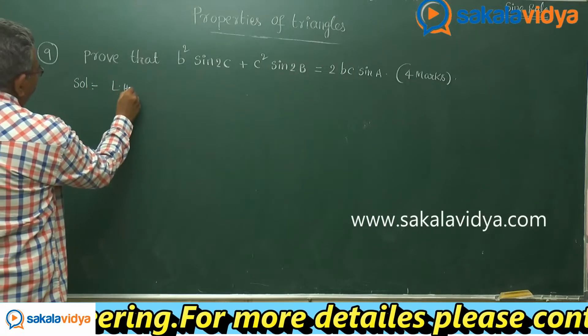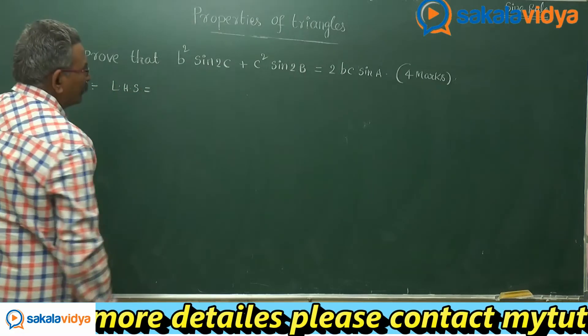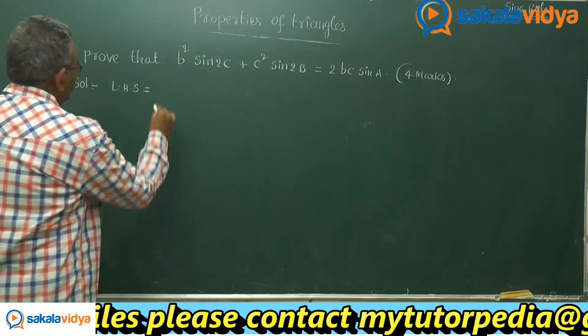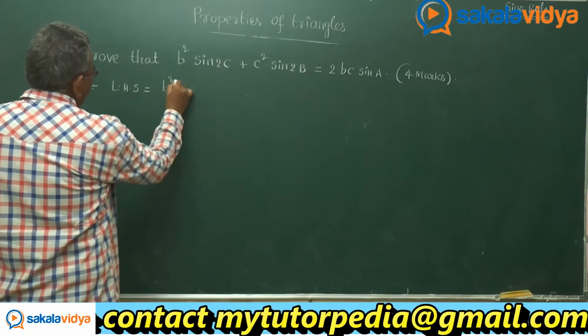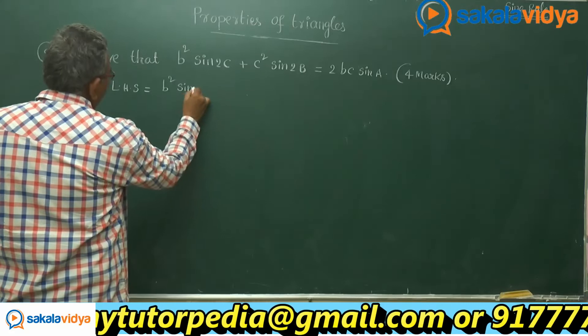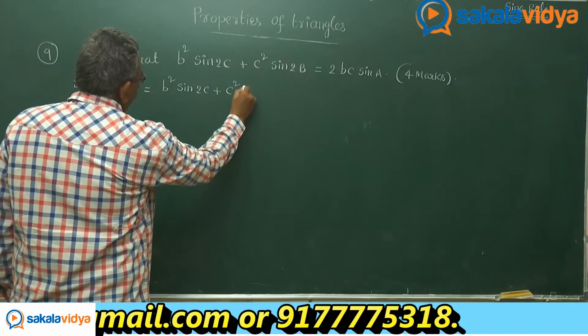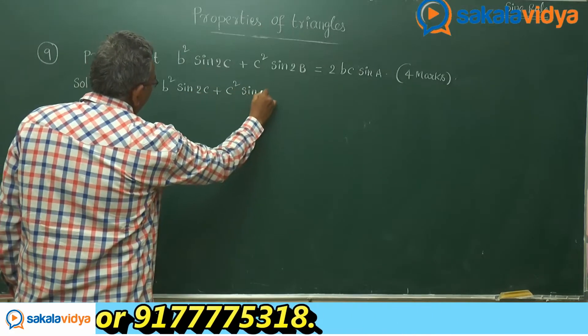Left hand side, that is b squared sin 2c plus c squared sin 2b.